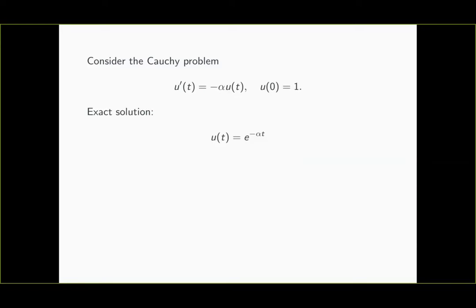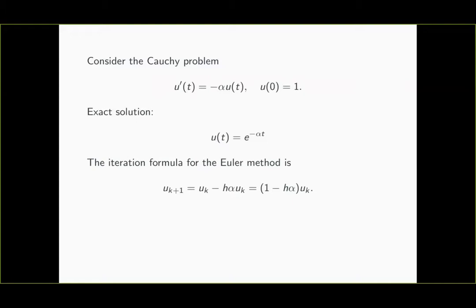Let's apply the Euler method to that simple model problem. The iteration formula for the Euler method is as follows: suppose we've already obtained an approximation u_k at some time step t_k. Then the approximation at time t_{k+1}, which we call u_{k+1}, is defined as u_{k+1} = u_k - h·α·u_k. Applying a minor simplification, we can also write the update formula as u_{k+1} = (1 - h·α)·u_k.